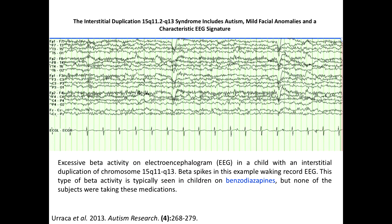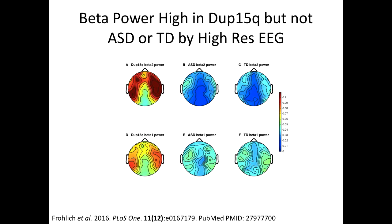We did a study a few years ago looking at interstitial duplication 15q. We had 14 individuals with interstitial duplications encompassing the breakpoint 2-3 region. With Ron Thebert's help, we identified increased beta activity in the waking EEG record in these kids that looked like they were on GABA-promoting drugs like benzodiazepines, but they were not. This was followed up by Shefali Jest using high-density EEG, and she got really beautiful results in both interstitials and isodicentric cases showing increased beta activity throughout the brain, not detected in ASD samples or typically developing individuals. This may turn out to be a strong biomarker for the syndrome.